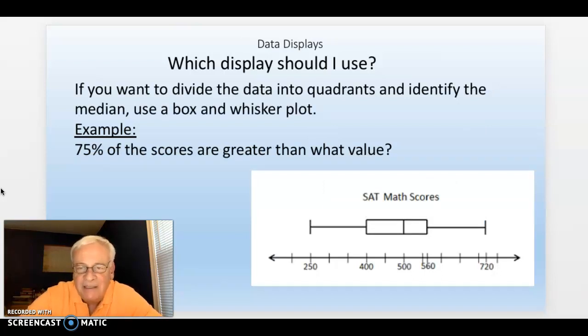If you're asking something about quartiles or percentages—like 25%, 50%, 75%—if you're asking something like that, use a box and whisker plot. Or if you're asking about the median, use a box and whisker plot.